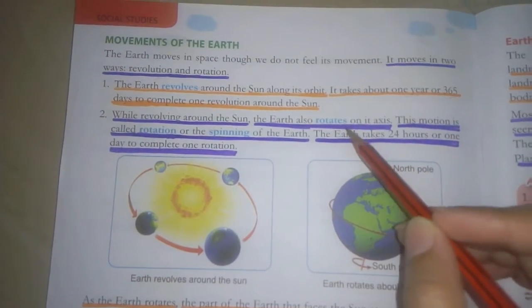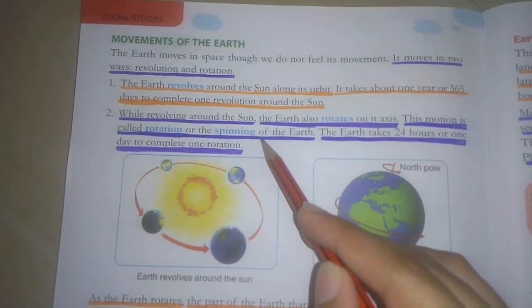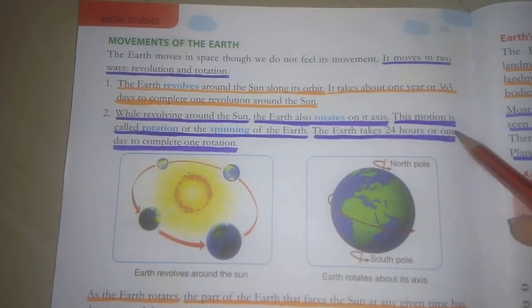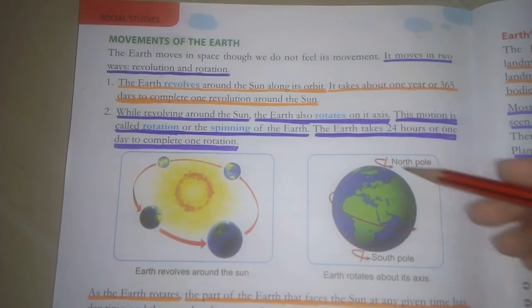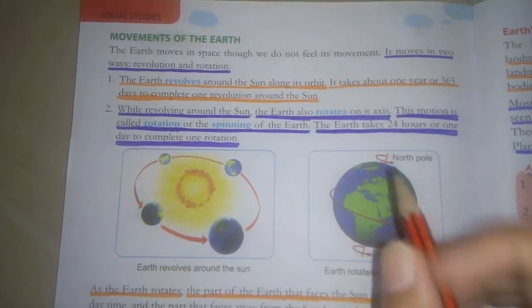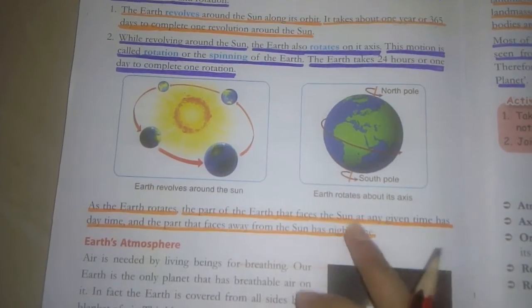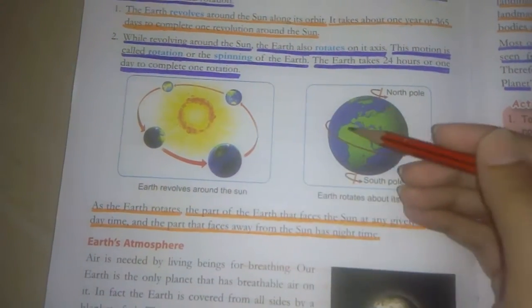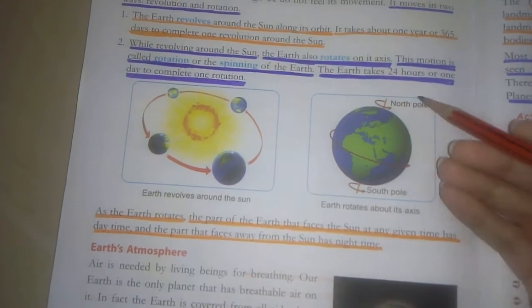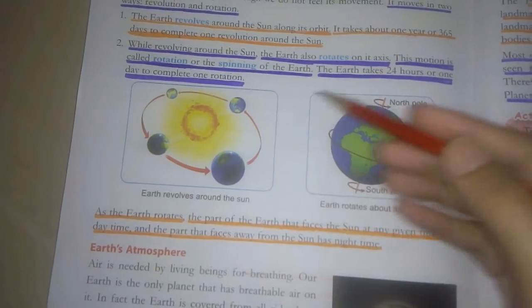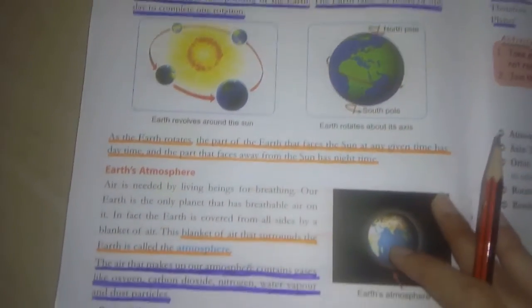Earth rotates on its axis. We call this rotation or spinning of earth. Earth takes 24 hours or one day to complete one rotation. This rotation causes day and night. The part of earth facing the sun will have day, and the part on the backward side won't receive sunlight, so there it will be night.